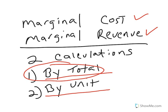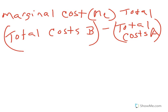Now I will walk you through how to calculate total marginal cost. It is simply taking the total cost of option B and subtracting the total cost of option A to get the marginal or extra cost from a production run. Now let's take a look at this in practice.